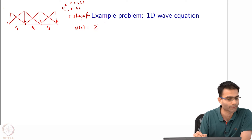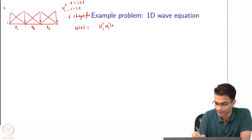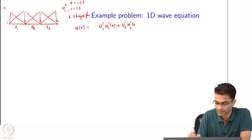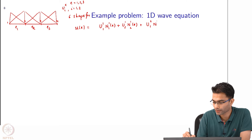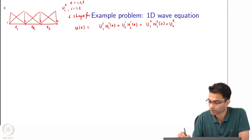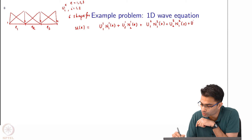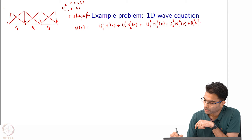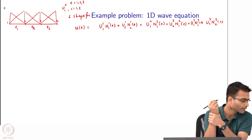The first unknown — let us write the unknown and then the shape function. So the first unknown is u_11 multiplied by N_11(x), next is u_12 · N_12(x), then u_21 · N_21, u_22 · N_22, plus u_31 · N_31, plus u_32 · N_32. All of this is a function of x.